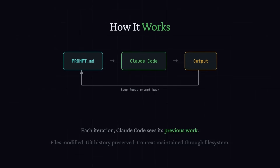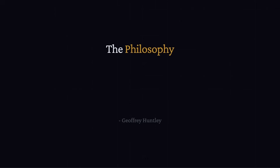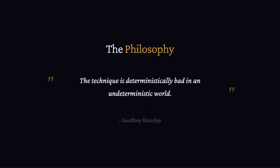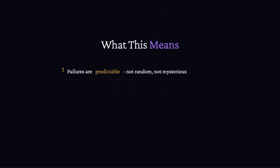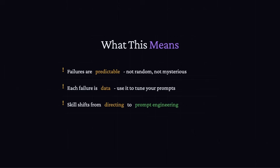The actual files on disk are the memory — that's how it maintains context across loops. Now here is where it gets interesting. Jeffrey said the technique is 'deterministically bad in an undeterministic world.' When Rough fails, and it will fail, the failures are predictable — there's a pattern you can actually learn from. Every failure tells you what the prompt was missing, what edge cases you forgot, or what assumptions were wrong. Over time, you stop trying to control every step and start saying 'here is what done looks like — figure it out.' You trust that with enough iteration it will converge — not perfectly, but functionally.